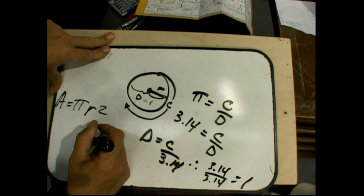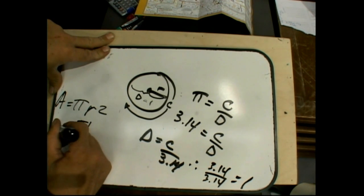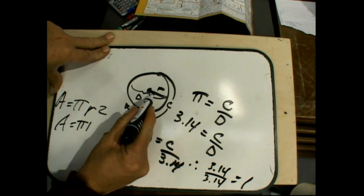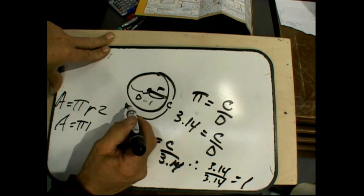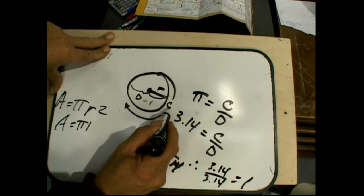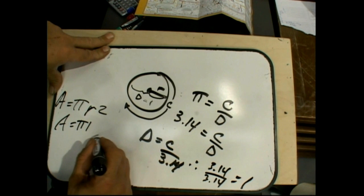So now with R equaling 1, 1 times pi is the area. So the circle here is going to have to be a diameter of 2. So what that tells you now is the circumference now becomes 2 pi.